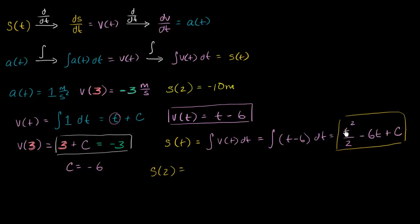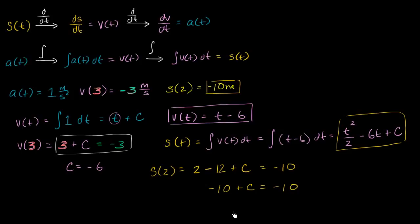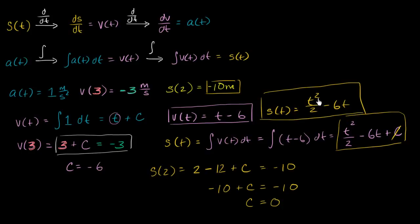Now we can solve for our constant using the fact that s(2) is negative ten meters. So s(2) is equal to two squared over two minus six times two plus c, which is two minus twelve plus c, giving us negative ten plus c equals negative ten. Adding ten to both sides, c is equal to zero. So our position as a function of time is t squared over two minus 6t. You can verify: when t equals two, two squared over two is two, minus twelve is negative ten. You take the derivative, you get t minus six. And we already verified that v(3) is negative three. Take the derivative again, you get a(t) just like that.